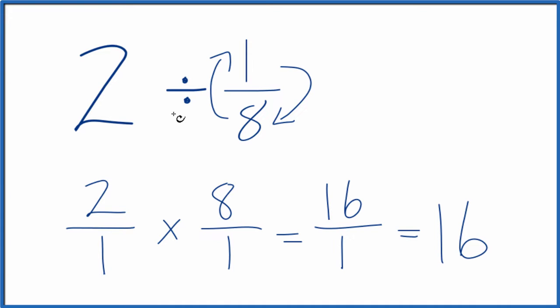So 2 divided by 1 eighth equals 16. If you were to multiply 16 by 1 eighth, you get 2. So we know we did this correctly.